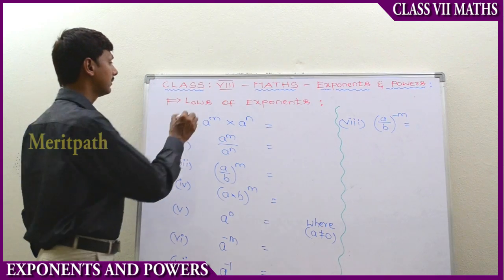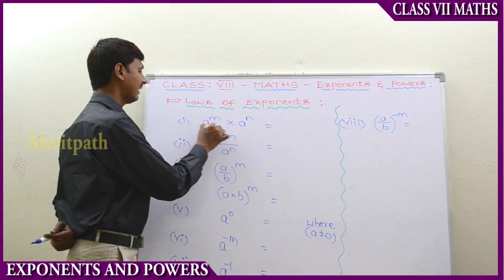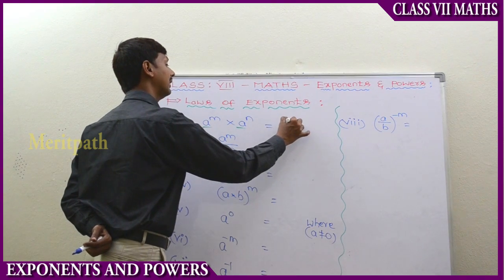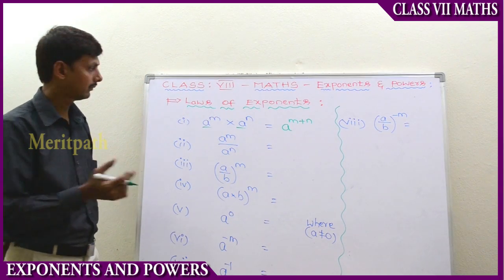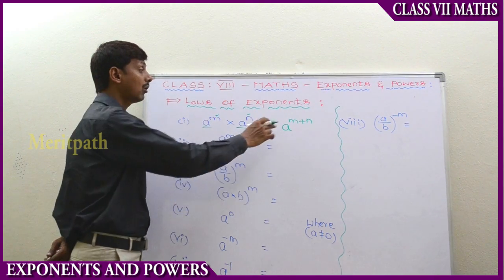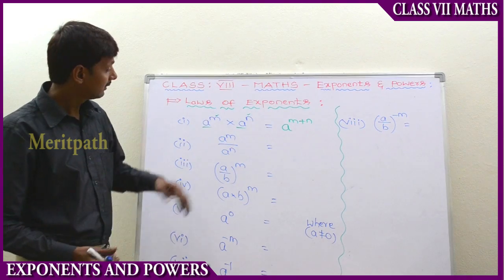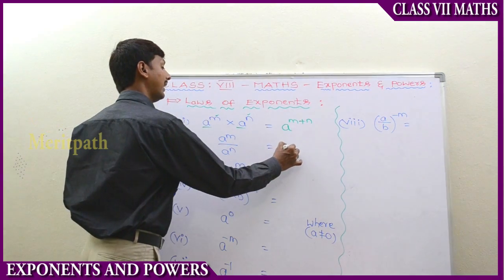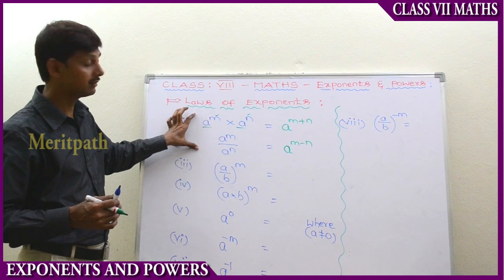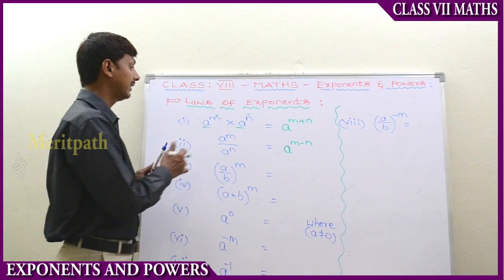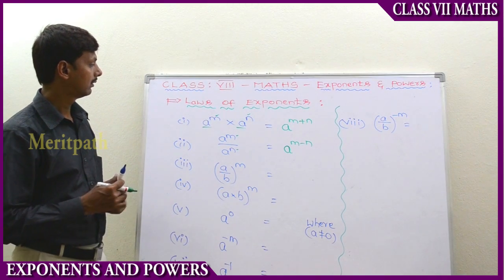So a to the power of m into a to the power of n: when the bases are same, we write as one base and add the exponents, giving a to the power of m plus n. For the second one, bases are equal but there is division; the exponents are different and we write a to the power of m minus n. When they are in multiplication, we add; when they are in division, we subtract.